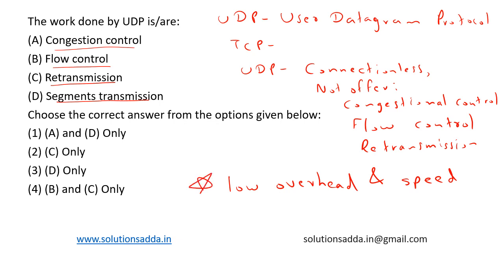UDP is preferred in cases such as online gaming or Voice over IP. For such use cases, only UDP is preferred. So congestion control is not a feature, flow control is not a feature, re-transmission is also not a feature. Segment transmission is a feature, so segment transmission only will be the correct answer.